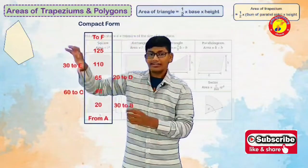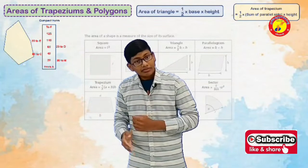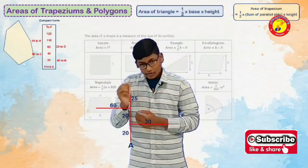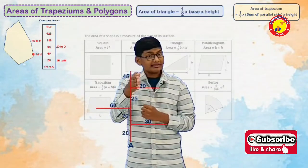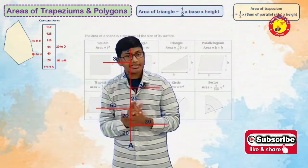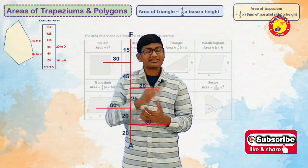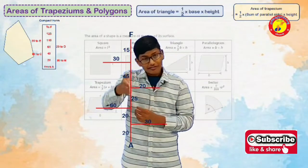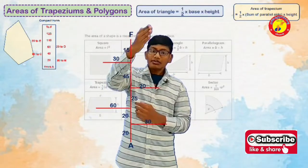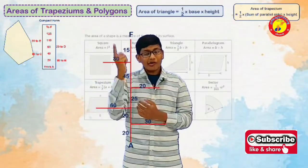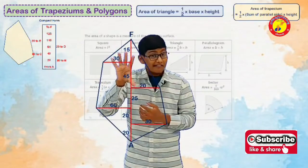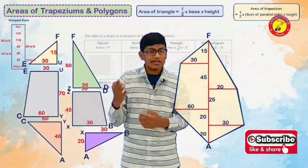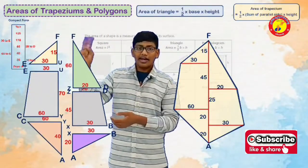Let me explain this. From A I will take a 20 cm line segment. Again from that point to the left side I will take a 30 cm line segment. From this point I will take again 20 cm, then 60 cm, then 25 cm, then to the left side 20 cm. From this point I will take 45 cm and again from that point 30 cm. Now I will connect all these vertices and I will get a diagram. This diagram is the one we first discussed about. I divided this diagram into 6 parts: 4 right triangles and 2 trapeziums.